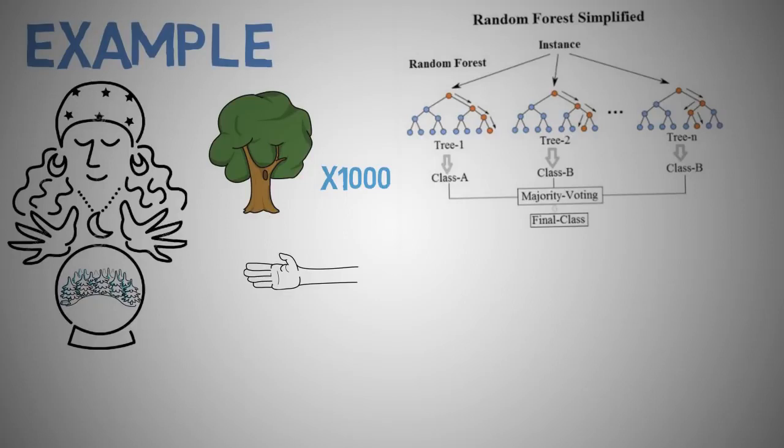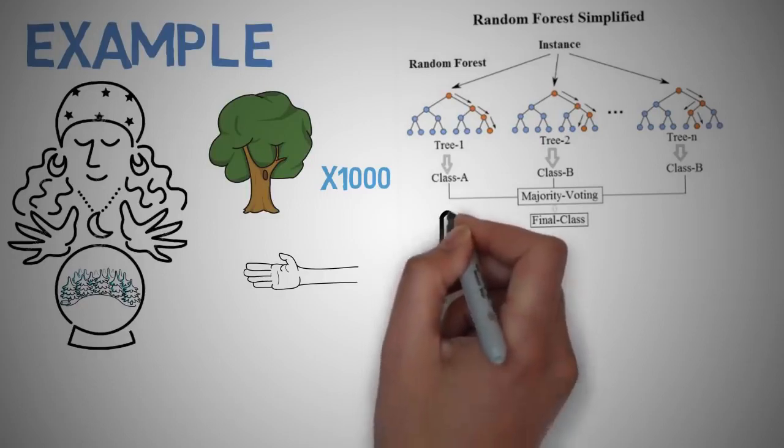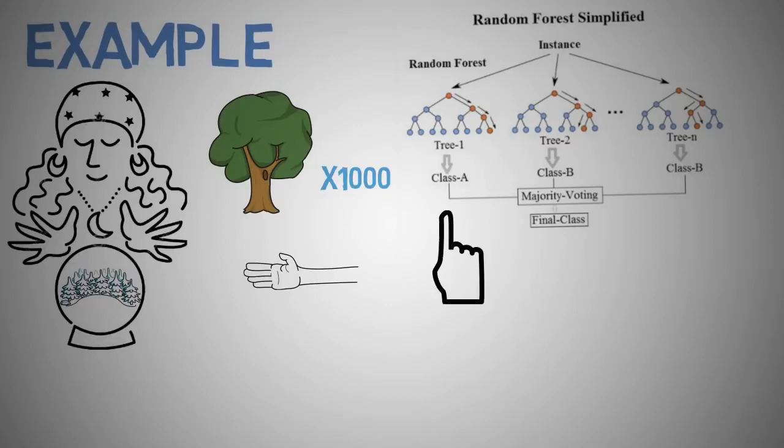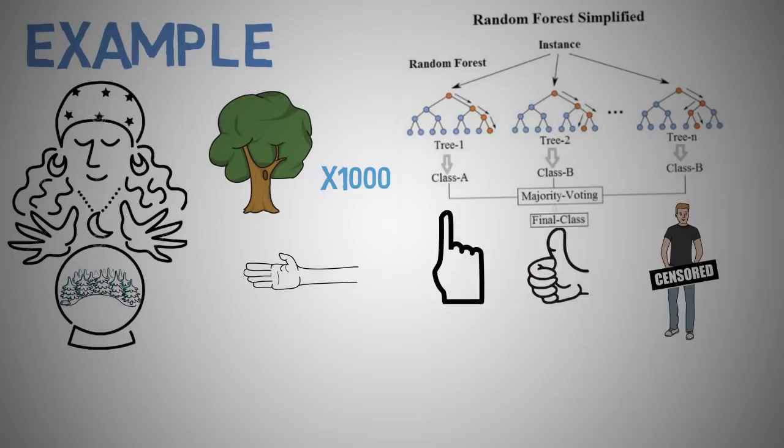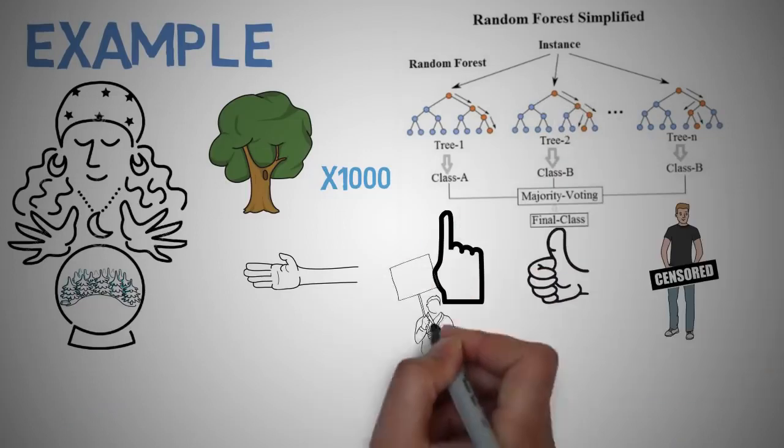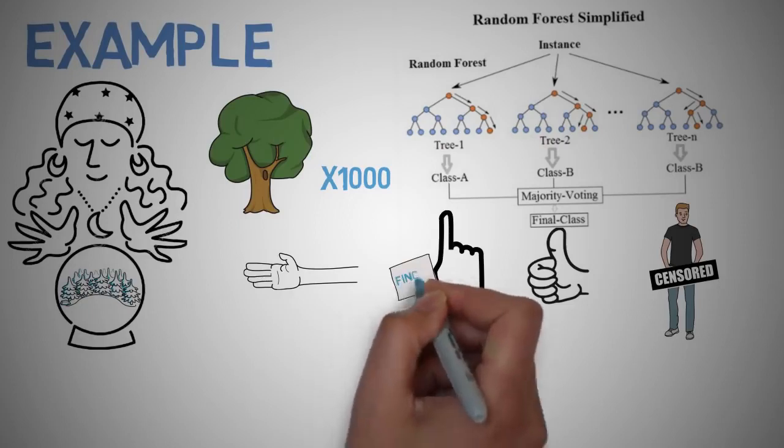A small subset of the forest will look at a random set of features, for example a finger. Suppose 100 random decision trees predict some three unique targets such as a finger, thumb, or maybe the nail, then the vote of a finger is tallied out of 100 random decisions and likewise for the other two targets.